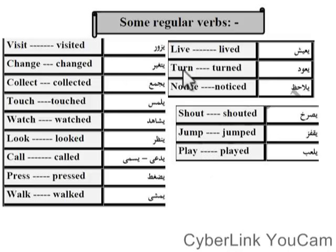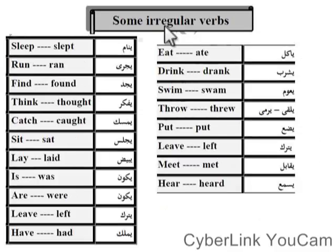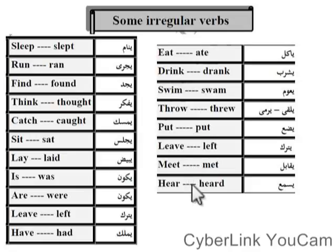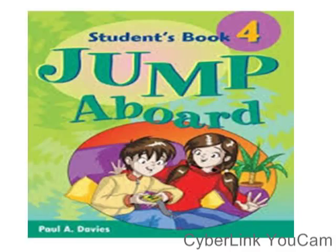مهم جداً إننا نحفظها ونعرف عشان ما نغلطش في الـ past، ونعرف كل تصريف الفعل بياخد إيه. دي بقى irregular — الأفعال الغير منتظمة أو الشاذة: sleep, run, find, think, catch, set, lay, is, are, leave, have, eat, drink, swim, throw, put, meet, hear. مهم جداً نفرق ونحفظ الأفعال المنتظمة والغير منتظمة. ده كان ببساطة شرح unit 2 لـ Jump Upward for Primary 4. اشتركوا في القناة!